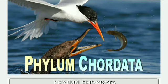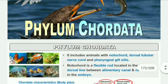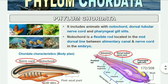Welcome to another topic of Class 11th, Chapter 4: Animal Kingdom. Now we talk about Chordata. In Greek, 'caud' means strings. Chordata includes animals with notochord, dorsal tubular nerve cord, and pharyngeal gill slits. The notochord is a flexible rod located in the mid-dorsal line between the alimentary canal and nerve cord in the embryo.